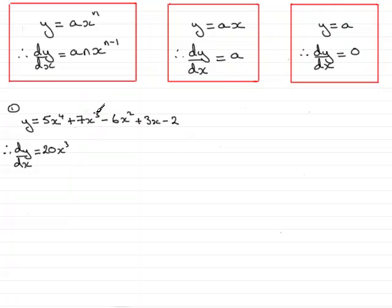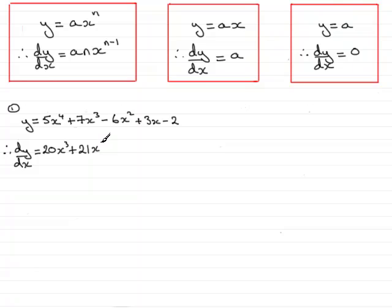As for the second term, it's again like Ax to the power n. I multiply the power by the number in front. So that's 3 times plus 7, which is plus 21. Reduce the power by 1, so that's x squared, giving plus 21x squared.